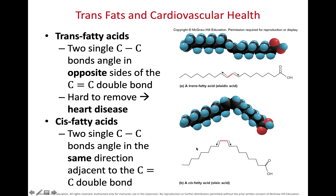Cis fats have a kink in them — the carbons are on the same side of the double bond, causing more of a bend in the molecule. Trans fats have carbons on opposite sides. Cis fats do occur naturally in nature; we make them in our bodies. That is why cis fats are generally the preferred fat for a dietary source — they don't have as many negative side effects.